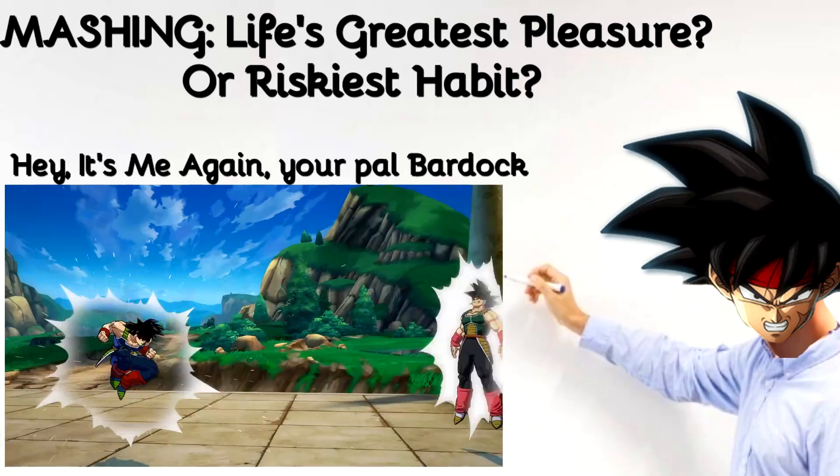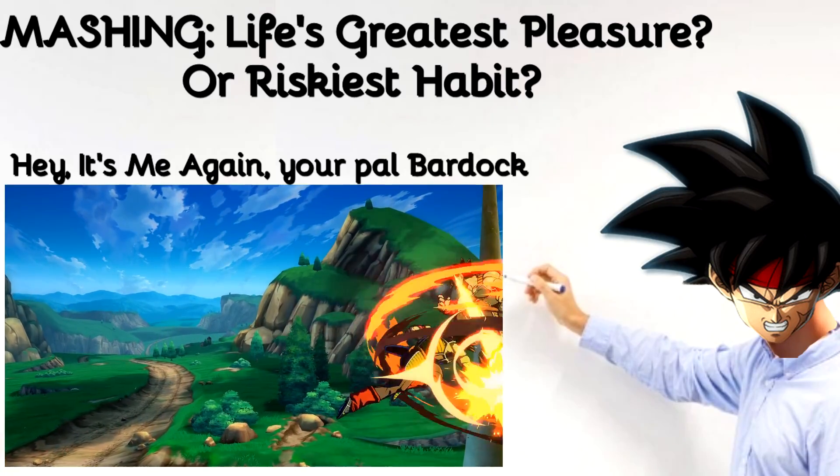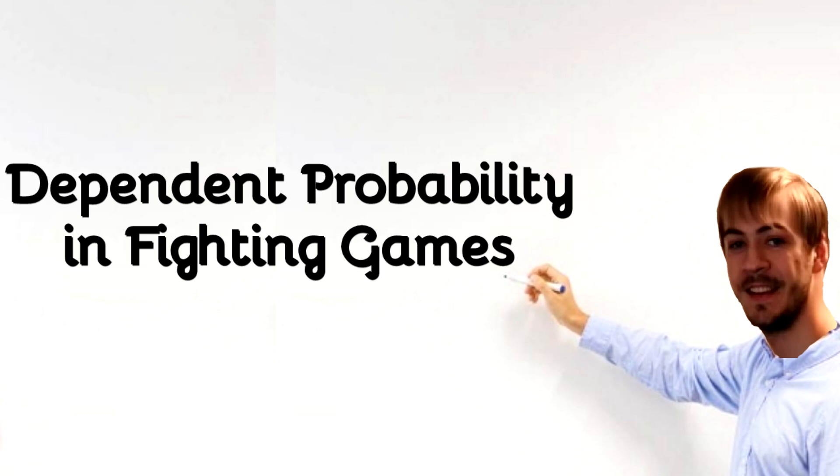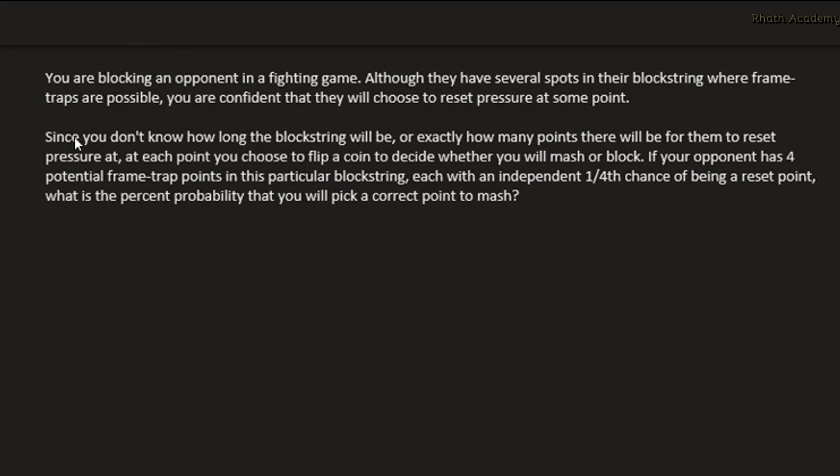A common situation in fighting games, translated into a solvable math problem. Here's an example of dependent probability in fighting games. You are blocking an opponent in a fighting game. Although they have several spots in their block string where frame traps are possible, you are confident that they will choose to reset pressure at some point. Since you don't know how long the block string will be, or exactly how many points there will be for them to reset pressure at, at each point you choose to flip a coin to decide whether you will mash or block. If your opponent has 4 potential frame trap points in this particular block string, each with an independent 1/4th chance of being a reset point, what is the percent probability that you will pick a correct point to mash?